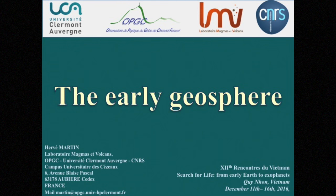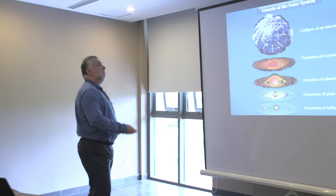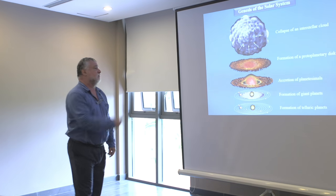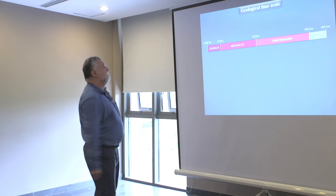This morning we have seen that the formation of the solar system required a lot of time, with different stages and episodes: the collapse of the cloud, formation of the protoplanetary disk, and after that, of course, formation of the planets. So I will come back to this, but before I would like to give you a geological time scale.